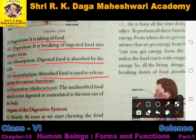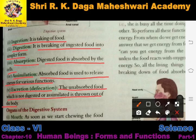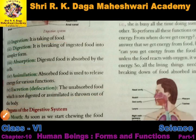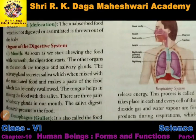Then excretion, which we also call defecation. The unabsorbed food which is not digested or assimilated is thrown out of the body. Food that is not digested and the waste material exits our body - this process is called excretion or defecation. Now we are going to discuss the various organs involved in the digestive system and what their functions are.